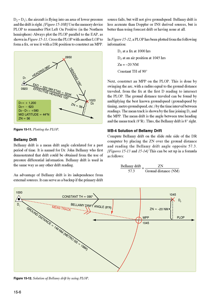MB4 Solution of Bellamy Drift: Compute Bellamy Drift on the slide rule side of the computer by placing the Zn over the ground distance and reading the Bellamy Drift angle opposite 57.3. Figures 15-13 and 15-14 show this can be set up in a formula as follows: Bellamy Drift equals 57.3 Zn/ground distance (NM).